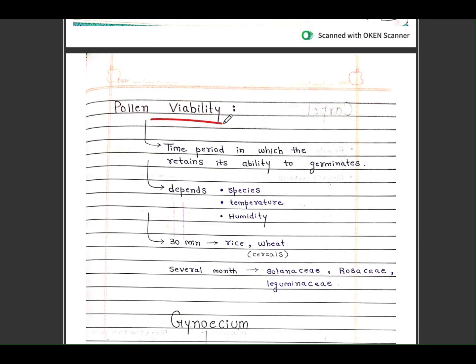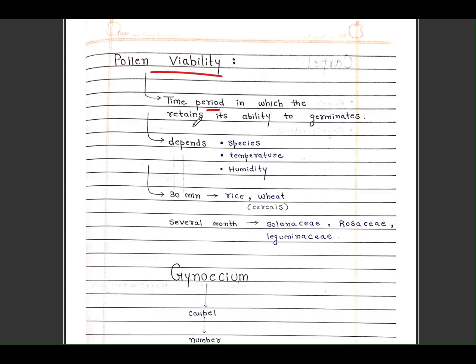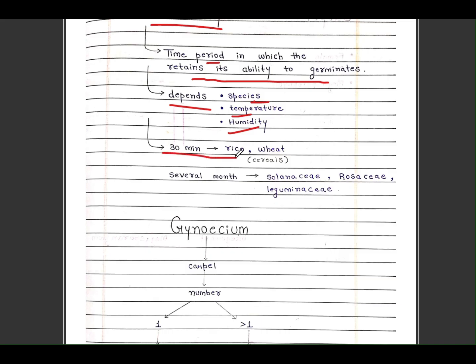Pollen viability is the time period in which it retains its ability to germinate. It depends on species, temperature, and humidity. 30 minutes for rice, wheat, and cereals. Several months for Solanaceae, Rosaceae, and Leguminosae.